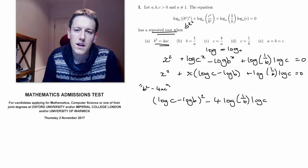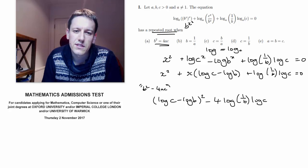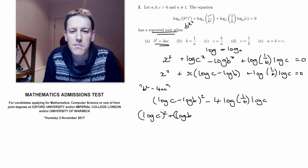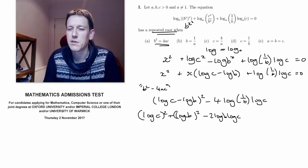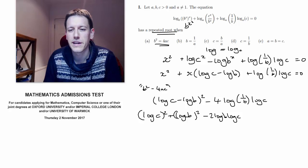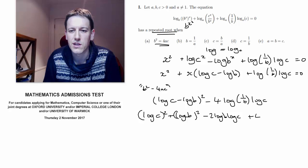I'm going to say on the left hand bracket I get log c squared plus log b squared minus 2 log b log c. And now I also notice it's going to be useful to write log 1 over b as minus log b, so I've actually got here plus 4 log b log c.